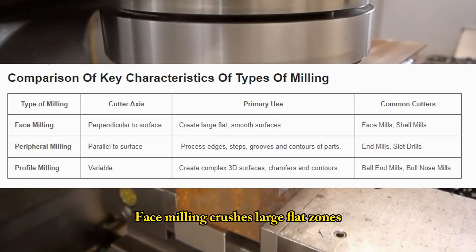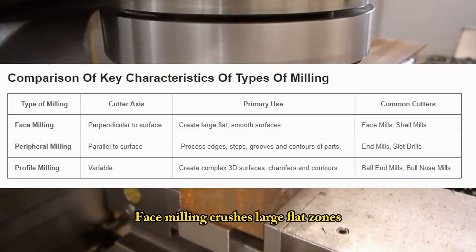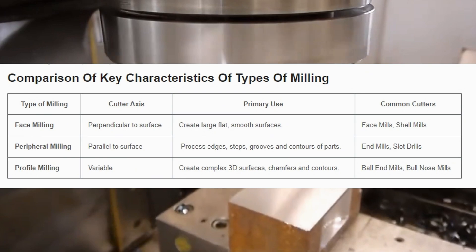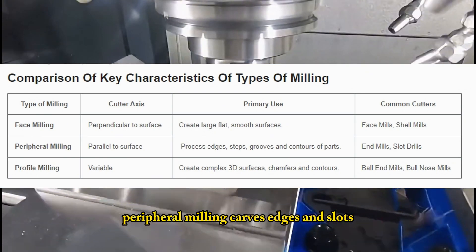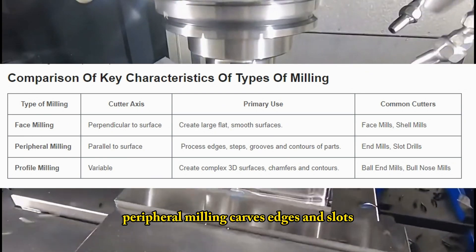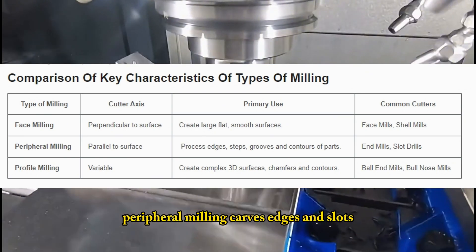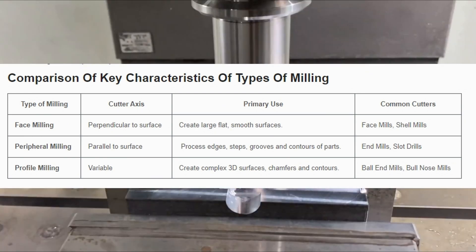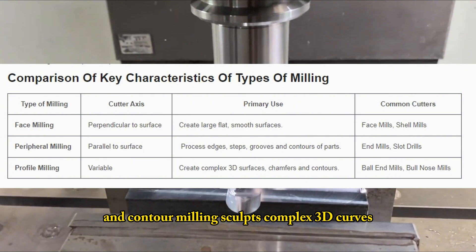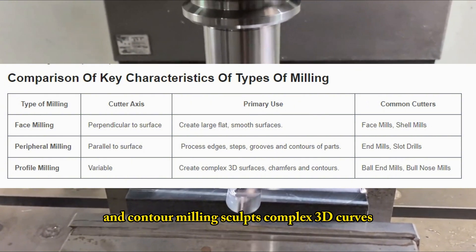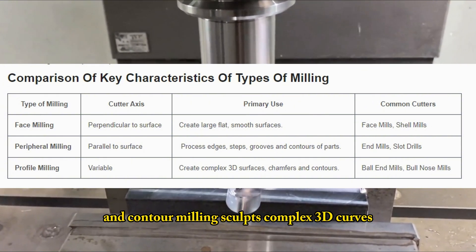Face milling crushes large flat zones. Peripheral milling carves edges and slots. And contour milling shapes complex 3D curves.